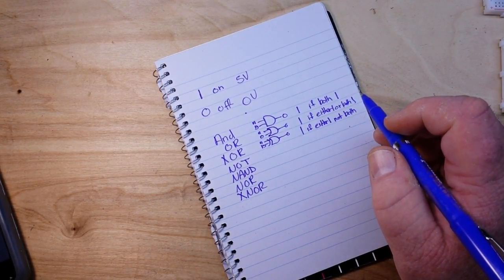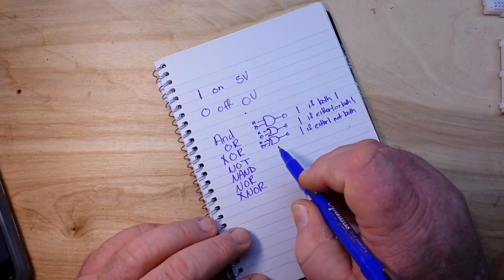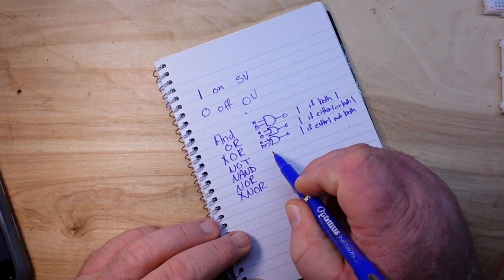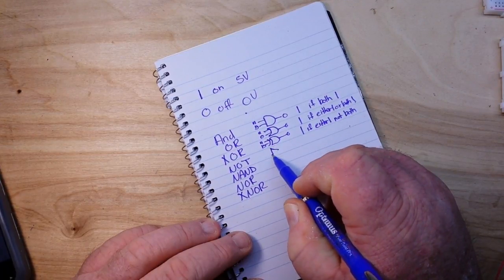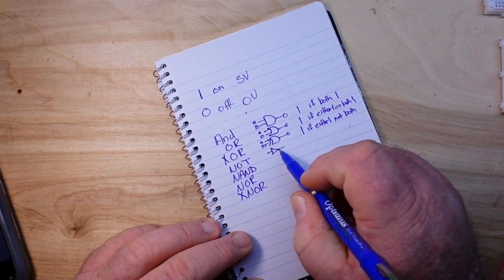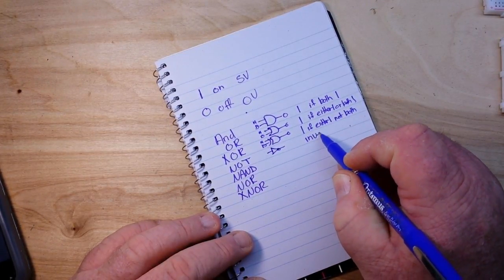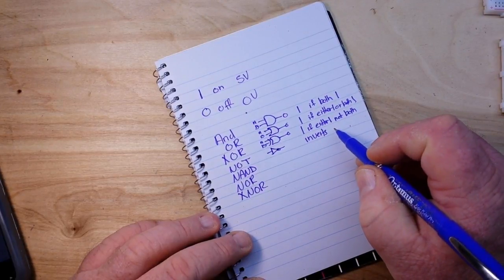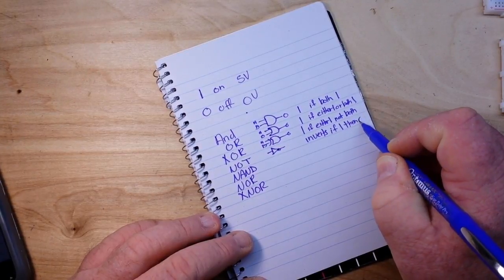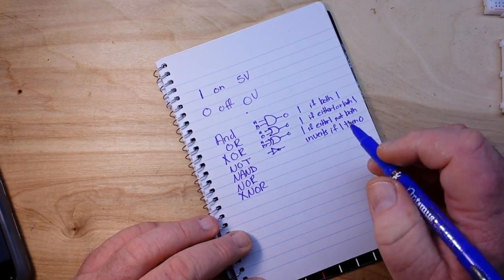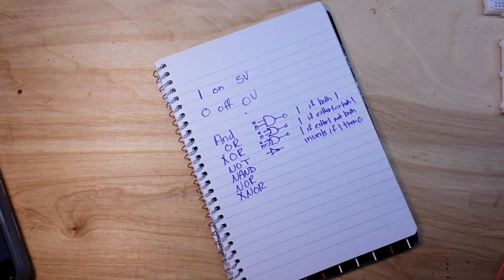Next we have the NOT gate and it is the logical inverter. So a NOT gate is simply a triangle with a little circle there, and it just inverts the signal. So if one then zero, pretty simple.